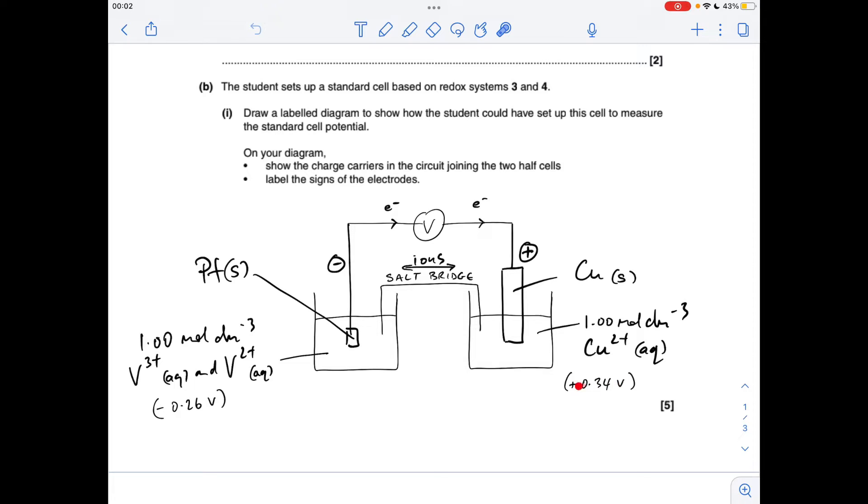I've just written up the electrode potentials of the half cells so you can see that the copper/copper 2+ one is the most positive, which makes it the positive electrode. Therefore the V3+/2+ is the negative electrode. The electrons obviously flow around this external circuit from the negative electrode to the positive one, so the electrons are going in that direction there.